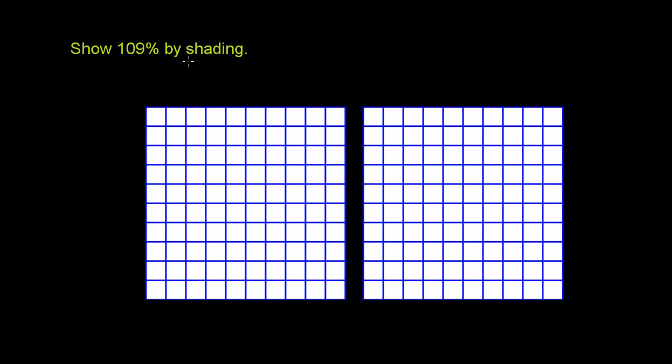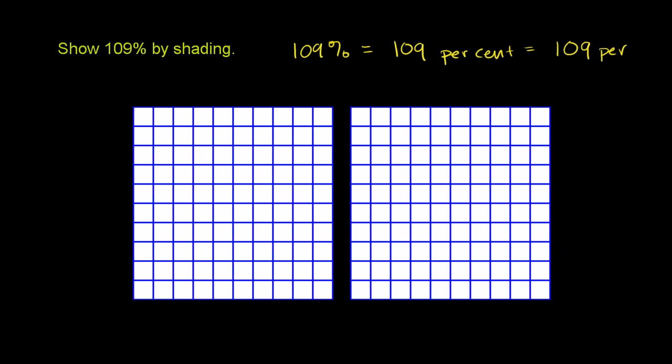Show 109% by shading. So just as a bit of a review, 109%, if we were to write it out, would literally be 109 per cent, which is the same thing as 109 per 100. Cent means 100, so it literally means 109 per 100.